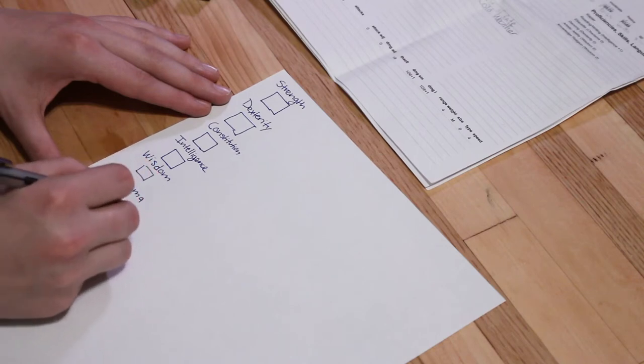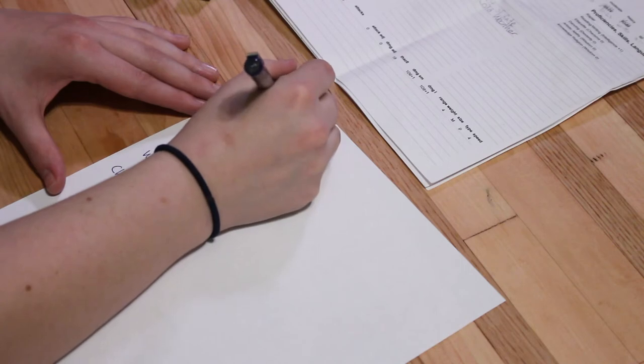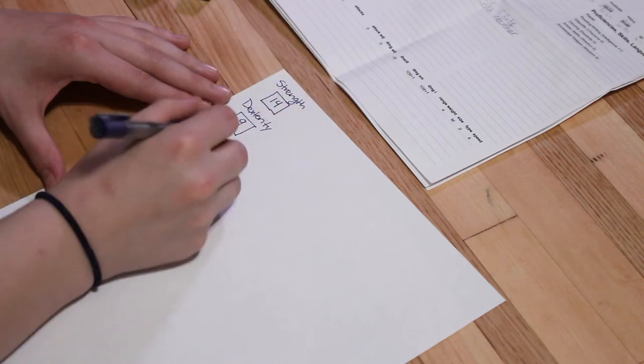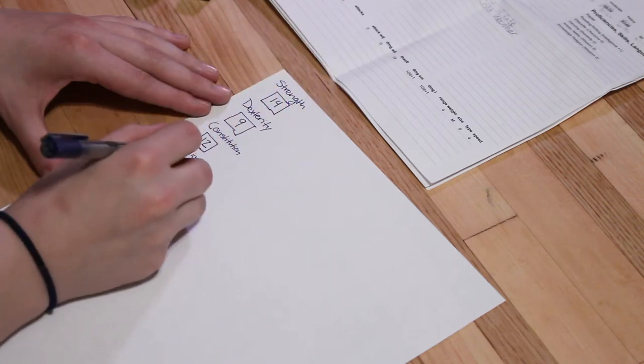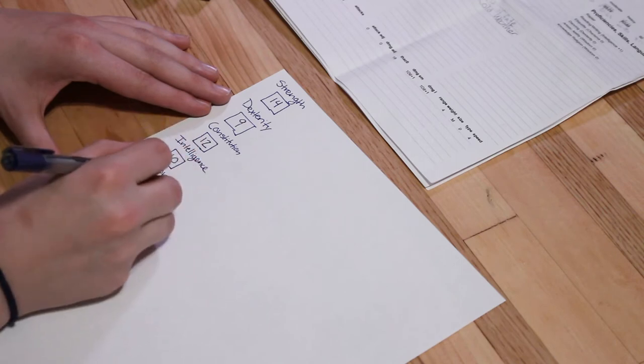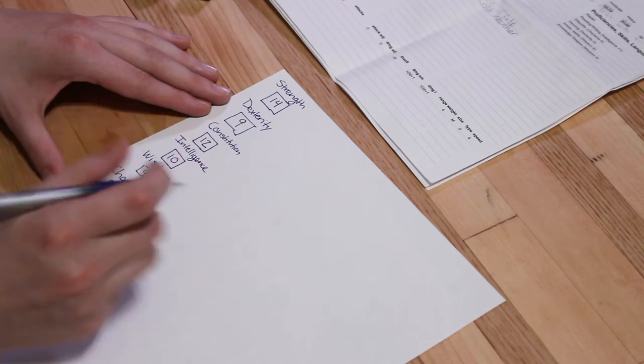The six stats include Strength, Dexterity, Constitution, Intelligence, Wisdom, and Charisma. These stats will determine some of your abilities and characteristics. The higher your stats are in one attribute, the more proficient you are in that area.